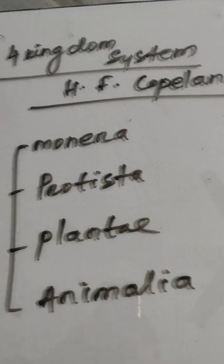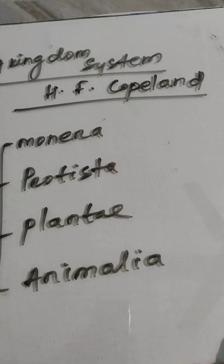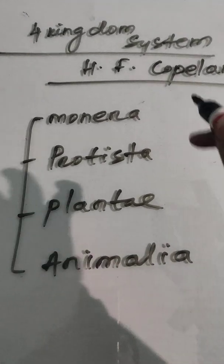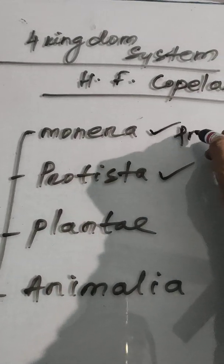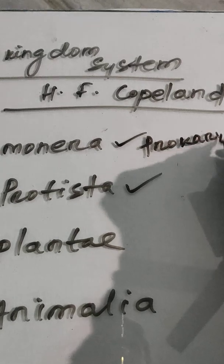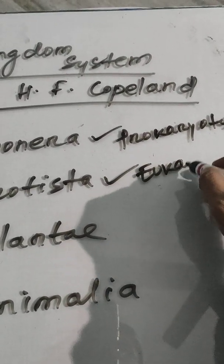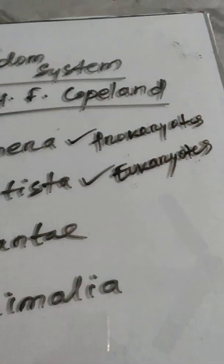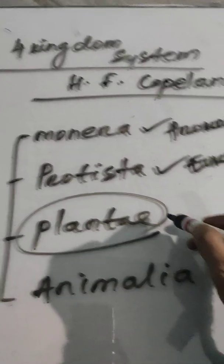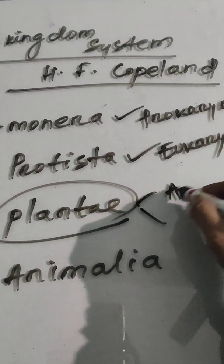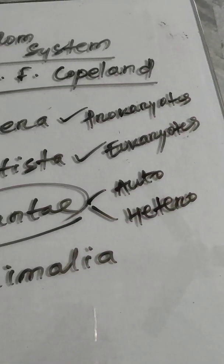After Haeckel, the four-kingdom system was given by H.F. Copeland. He divided living organisms into four groups, placing prokaryotes into a separate kingdom called Monera, while the rest remained similar. However, Planta still consisted of both autotrophic and heterotrophic organisms, which should have been separated — and this was corrected in the five-kingdom system.